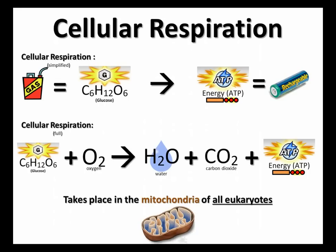Respiration takes place in the mitochondria of all eukaryotes. A eukaryote is something with a nucleus, contrasted with a prokaryote which has no nucleus. And this does include plants. Huge misconception: people think photosynthesis equals plants, respiration equals animals. No! Photosynthesis — plants, yes. But respiration — plants and animals, and fungi, protists — everything that has a nucleus performs respiration, including plants.